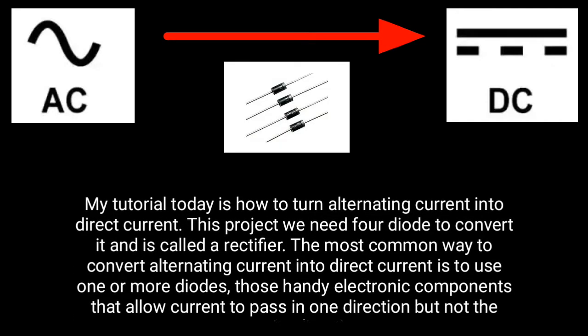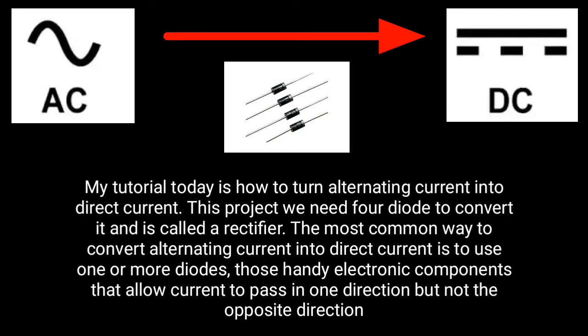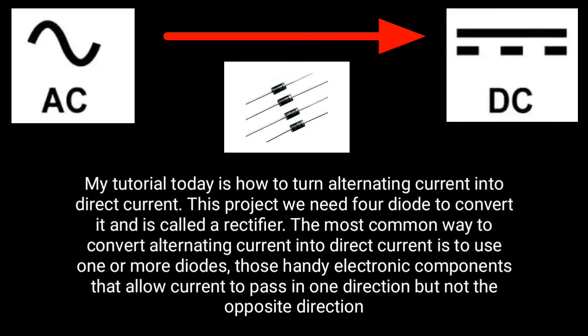This project uses diodes to convert alternating current — a process called a rectifier. The most common way to convert alternating current into direct current is to use one or more diodes, those handy electronic components that allow current to pass in one direction but not the opposite direction.